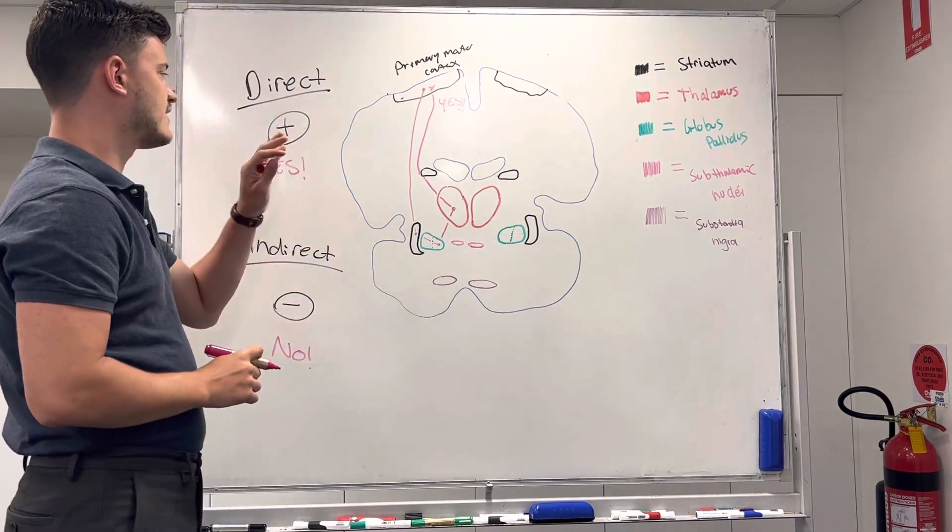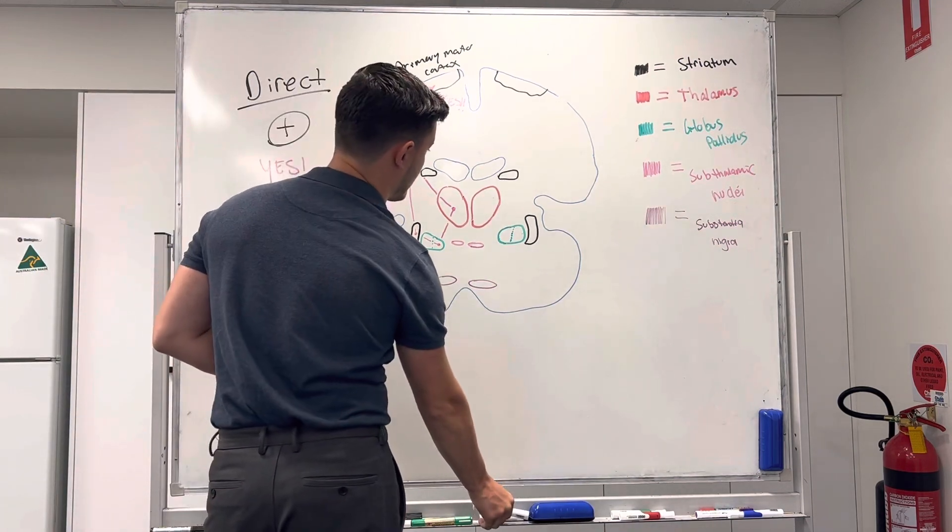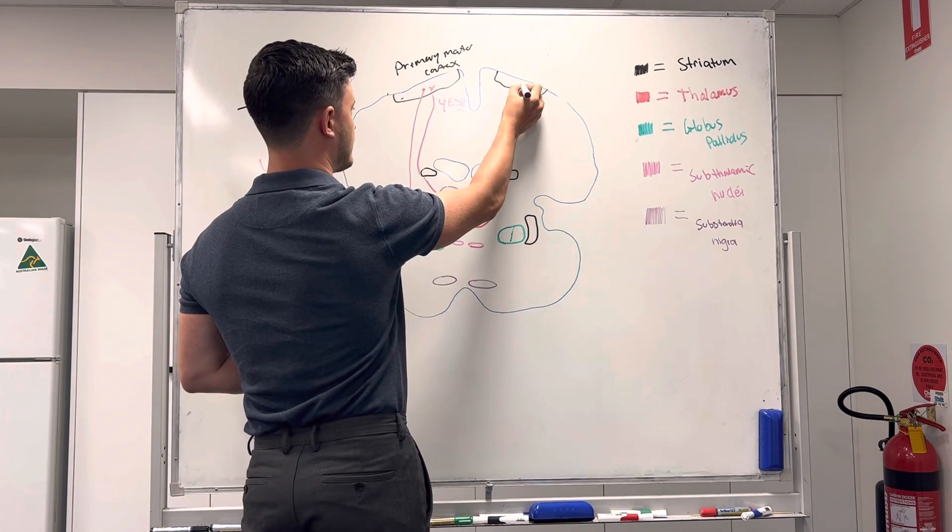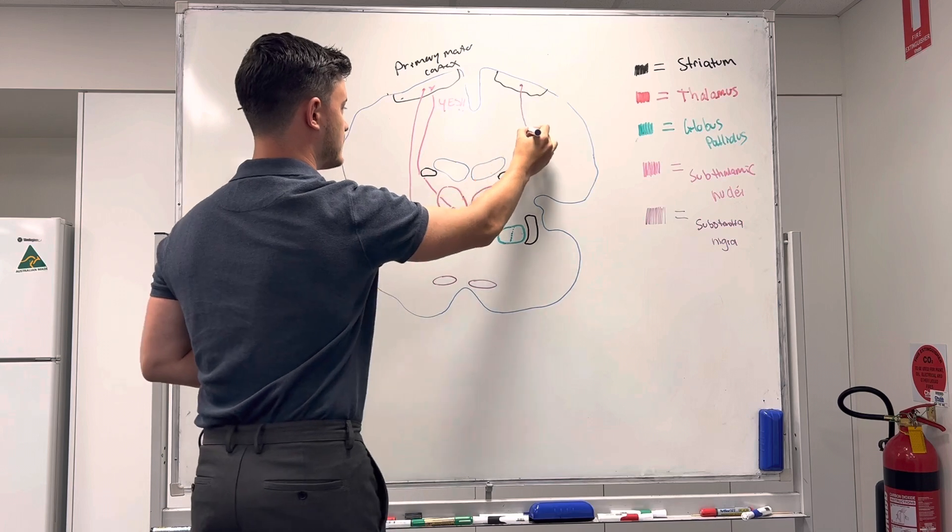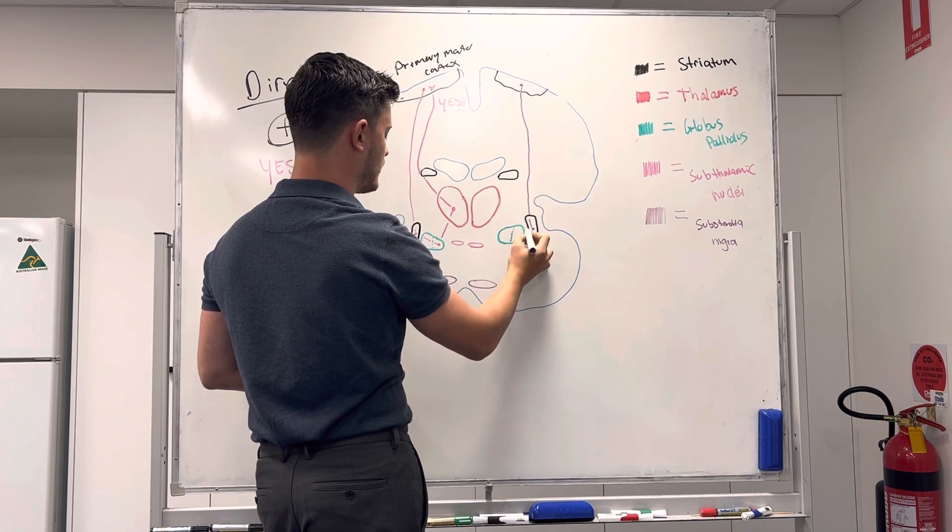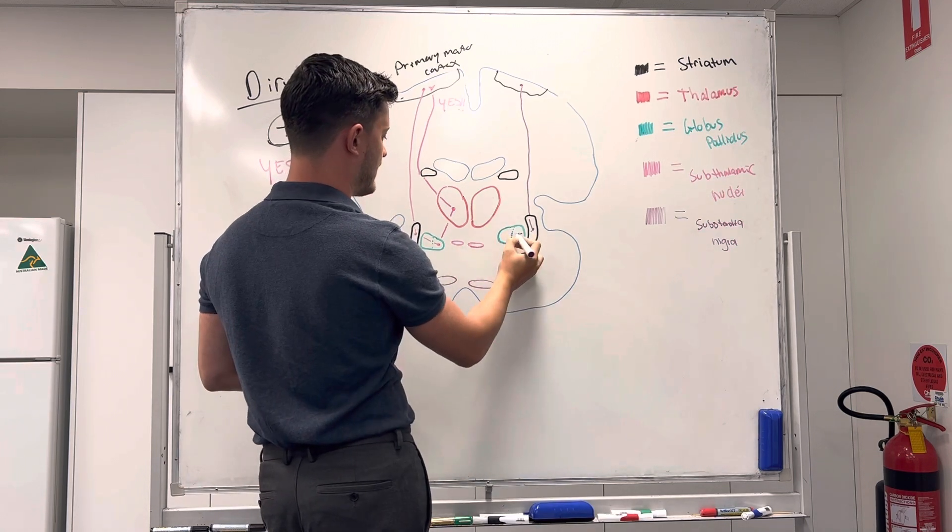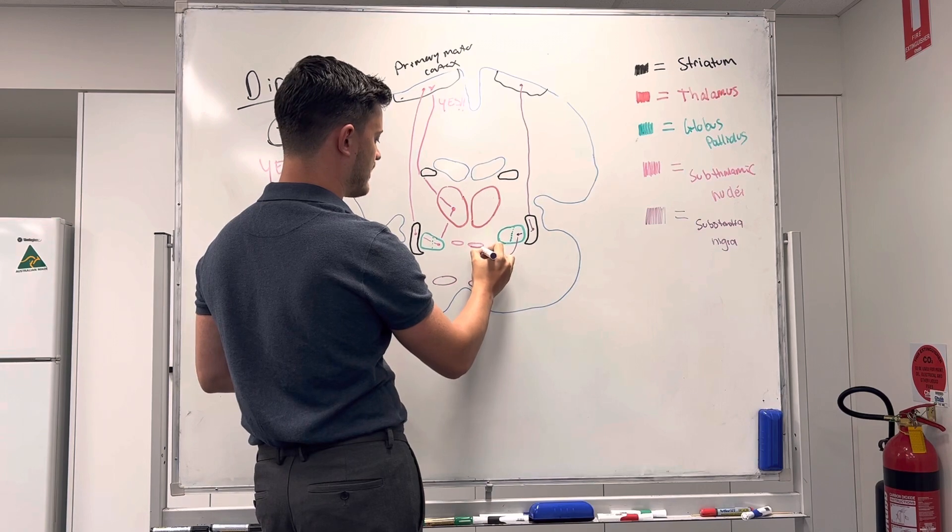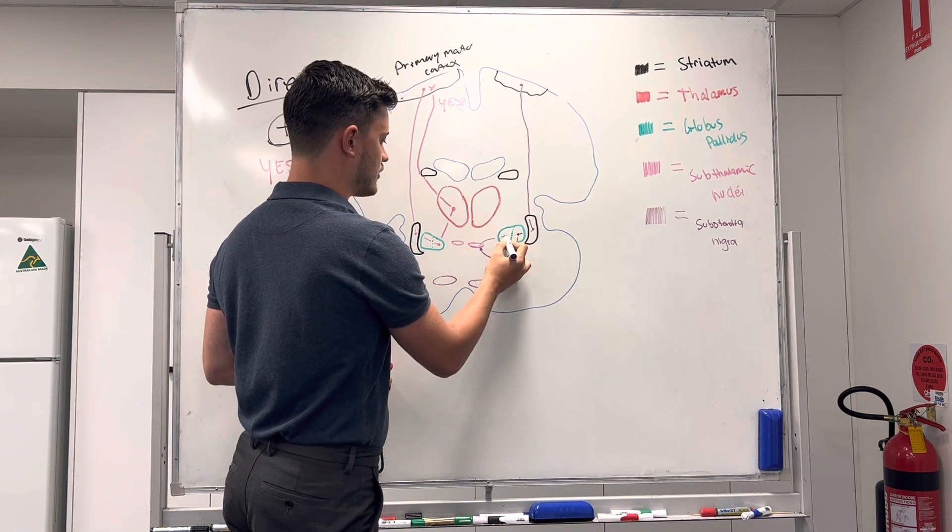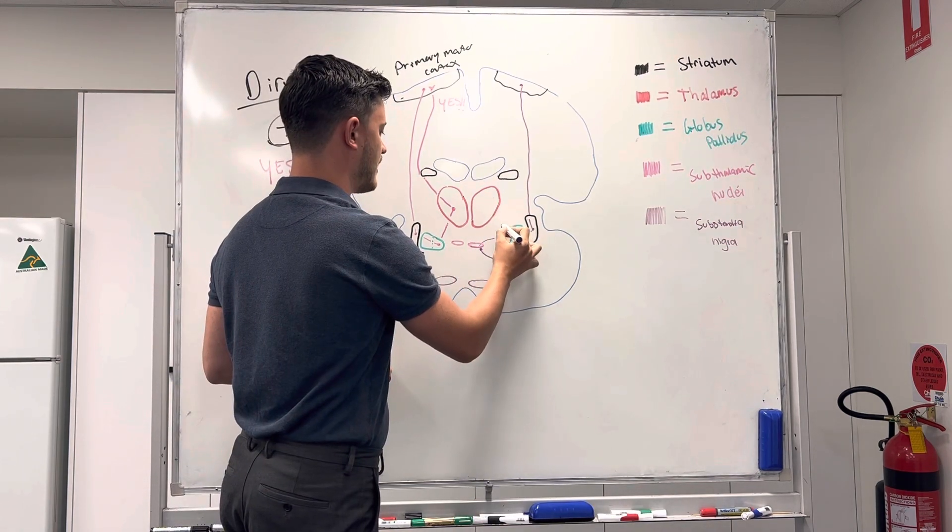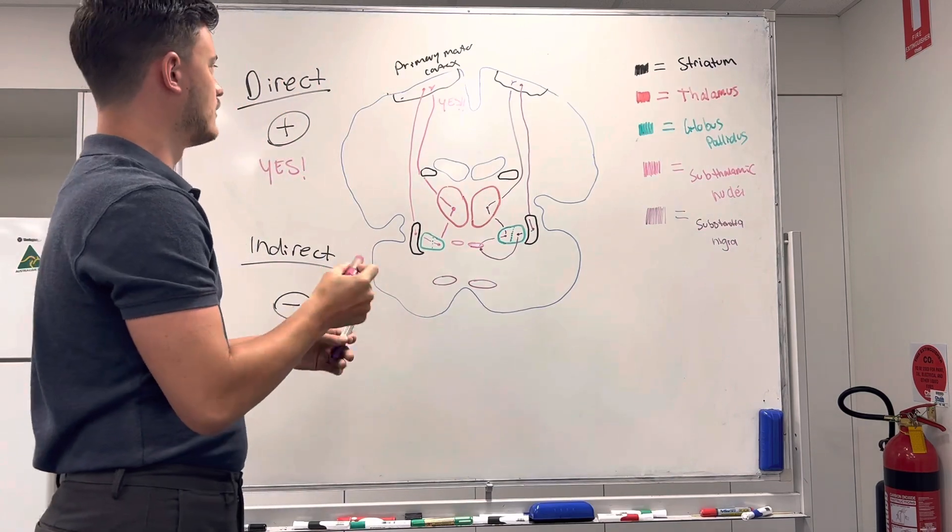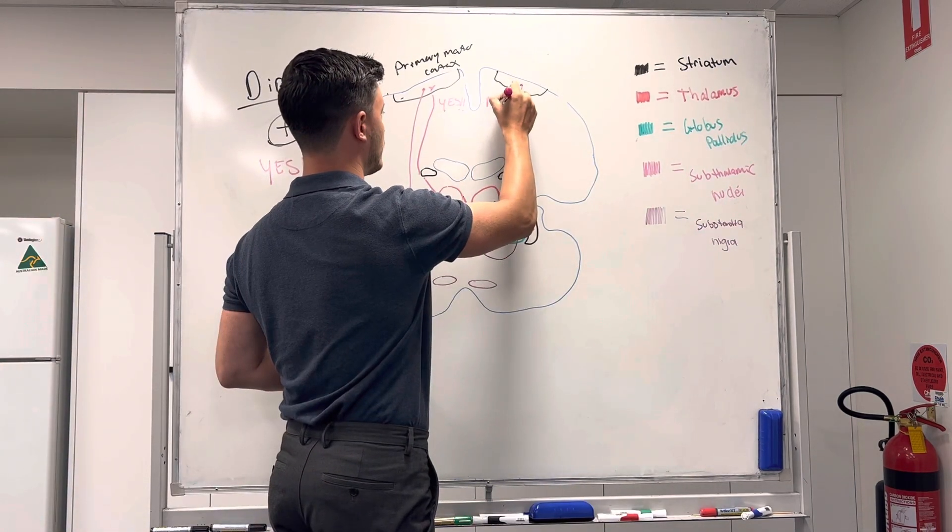But simultaneously, what we're going to get is a no pathway as well. So, I'm going to draw out now the no pathway, and I might do that in, let's go with purple, make it a little bit easier to see. So, it starts off in the same part, of course, in the primary motor cortex, where that muscle movement is initiated. It comes on down, it also synapses in the striatum. It travels across into the external segment of the globus pallidus. But this time, what it actually does is it travels around to the subthalamic nuclei, and it also synapses there. And then when it synapses, it actually travels back to now the internal segment of the globus pallidus, and then it continues its pathway as it normally would, through the thalamus, and then back up to the primary motor cortex to say no. So, that is the no pathway, or the indirect pathway.